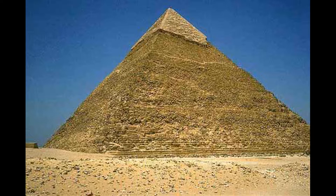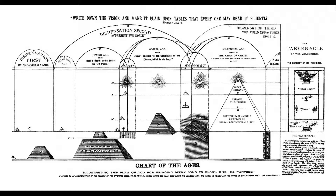Russell believed the Great Pyramid was part of God's overall plan of salvation. So much so that he actually included the Great Pyramid in his dispensational chart called the Chart of the Ages. In this chart you can see several features.